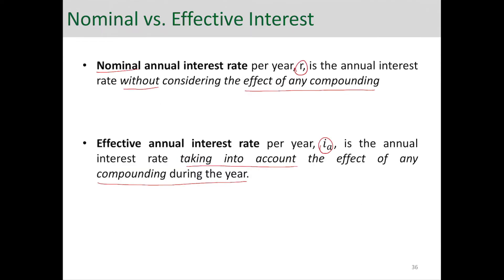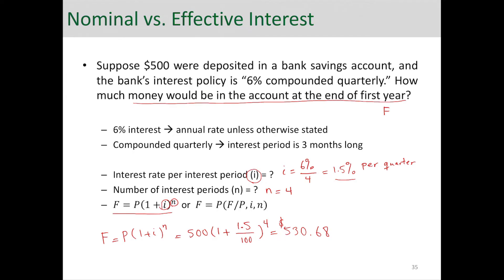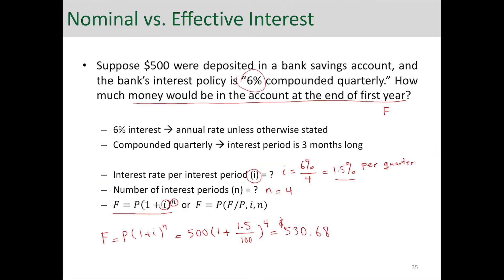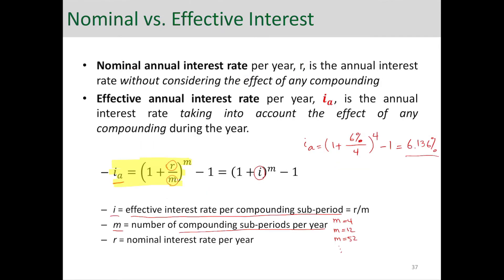Let's use the example we had: 6% compounded quarterly, giving 1.5% per quarter. To calculate the effective interest rate: 1 plus R over M, raised to M, minus 1. R was 6% and M is 4, because compounding occurs every quarter. The effective rate comes out to 6.136%, which is a little higher than the 6% nominal rate. So 6% is the nominal rate and 6.136% is the effective rate. The effective rate is always greater than or equal to the nominal rate.